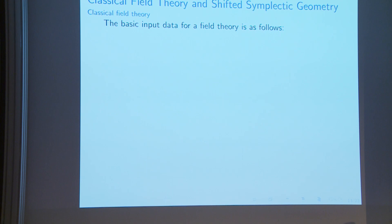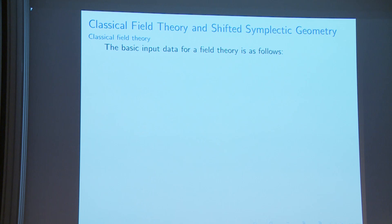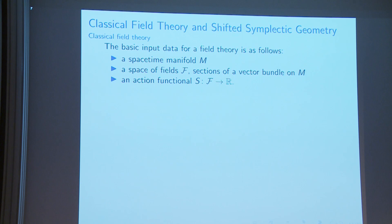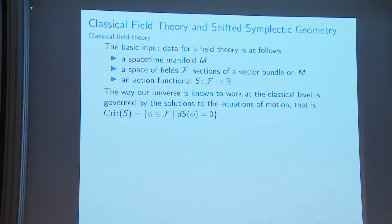Before getting there, I want to say a few words about the framework we are working with — specifically, how we understand classical field theory as an object of shifted symplectic geometry. Field theory is given by a spacetime manifold, a space of fields, and an action functional. At the level of classical field theory, what you care about is the moduli space of solutions to the equations of motion, sometimes written as Crit(S) or EOM(M).